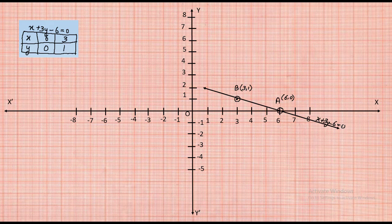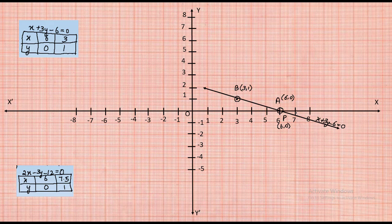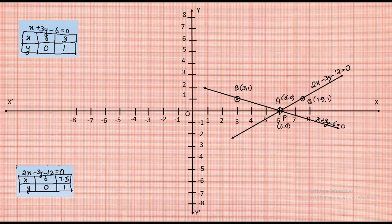For Equation 2, the first point is at x = 6, y = 0 — the same point, which we mark as P(6, 0). The second point is at x = 7.5, y = 1 — between 7 and 8 on the x-axis and 1 on the y-axis — marked as Q(7.5, 1). Drawing a line through P and Q represents 2x − 3y − 12 = 0.